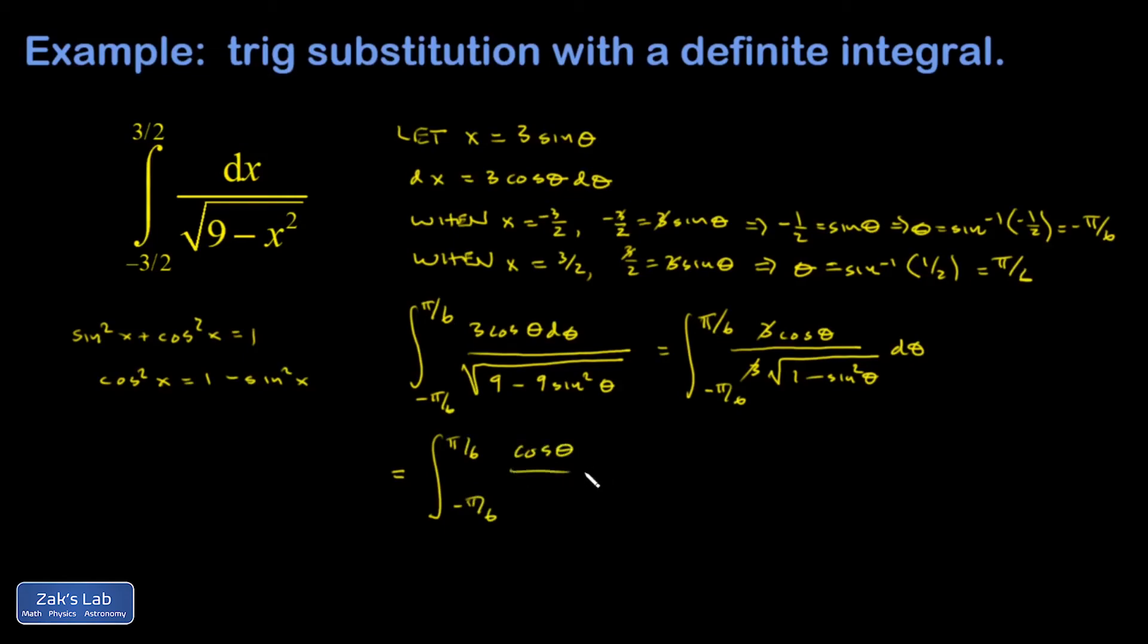Cosine theta in the numerator, there's a cosine theta in the denominator, and this is nice. That's just 1. And I get the integral of d theta, which is just theta evaluated.